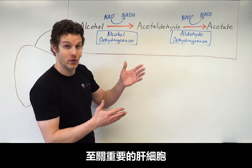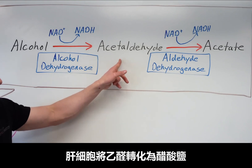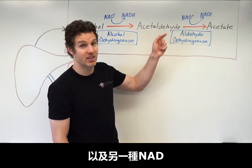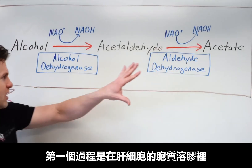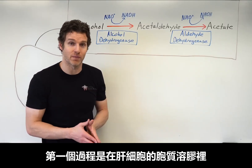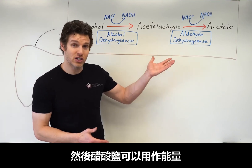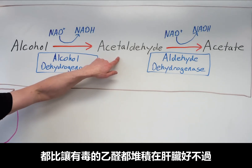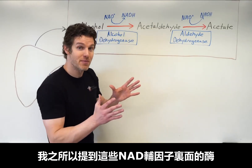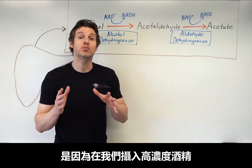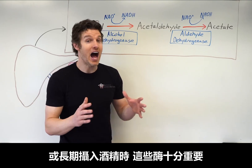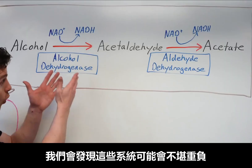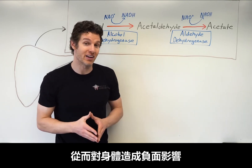So this next conversion by the liver cells is obviously going to be quite important. The liver cells then convert the acetaldehyde into acetate, which requires another enzyme called aldehyde dehydrogenase as well as another NAD. This step actually occurs within the mitochondria — the first step occurs within the cytosol of the liver cell. Acetate can then actually be utilized as energy, which is a much better option than having the toxic acetaldehyde building up in the liver. However, these enzymes and the cofactor NAD will be important when we have situations of ingesting high levels of alcohol or chronic use of alcohol — we can overwhelm these systems, which can have some negative effects on the body.